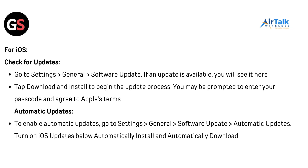For iOS, go to Settings, then General, then Software Update. If an update is available, you will see it here. Tap Download and Install to begin the update process. You may be prompted to enter your passcode and agree to Apple's terms. To enable automatic updates, go to Settings, then General, then Software Update, then Automatic Updates. Turn on iOS Updates under Automatically Install and Automatically Download.